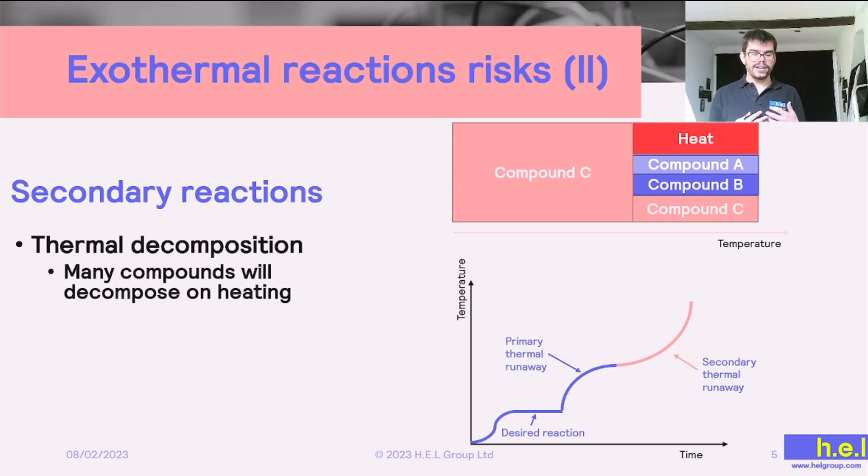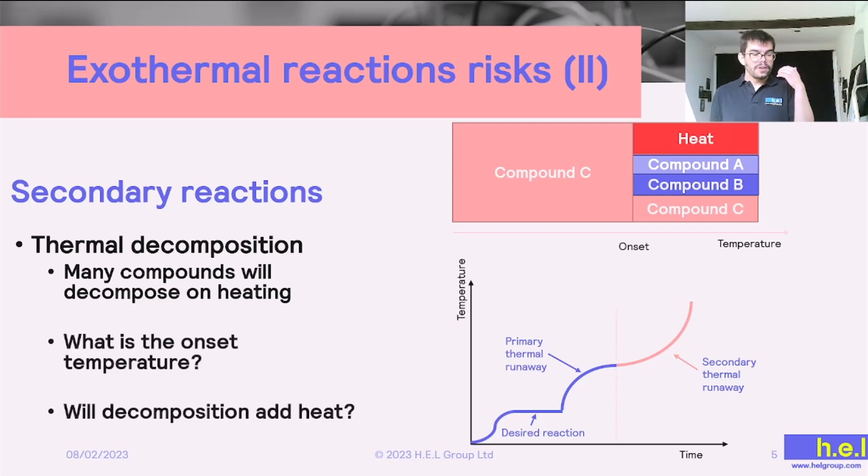So if we study how our reaction would progress, we would see that the temperature increases, then it's going to reach a plateau because of the cooling, but if the cooling fails, then we are going to see a sudden increase again on the temperature. And to predict this, the onset temperature is a very important parameter, and the onset temperature is going to be the temperature at which our decomposition reaction is going to accelerate and we are going to be able to detect it. And also we need to investigate if our decomposition reaction is going to add heat to the system, even worsening our situation.